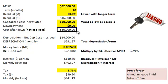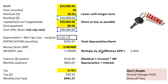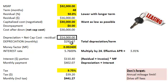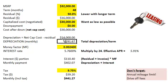Minus any down payment would be our net cap cost — our cost after the down payment. The monthly lease payment is a sum of two components: the depreciation payment plus the interest payment. After all, leasing is financing and we should expect to pay interest. The depreciation is pretty straightforward — we take the net cap cost, which is what we're paying for the car after the down payment, minus the residual. Over the 48 months, we expect $14,000 in depreciation. So the depreciation component of our payment is simply $14,000 divided by 48 months, which equals $291.67 per month.